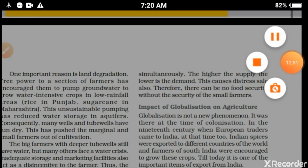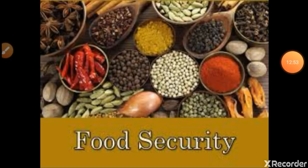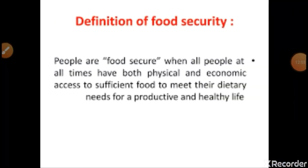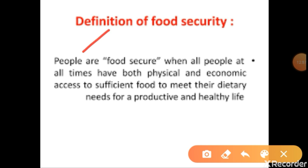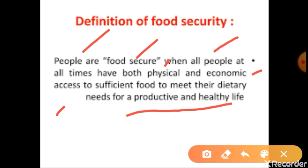Now, with the help of the PPT, let us understand more points related to food security. What is food security? People are food secure when all people at all times have both physical and economic access to sufficient food to meet their dietary needs for a productive and healthy life.